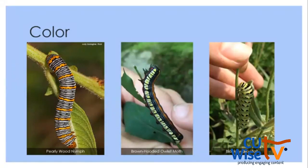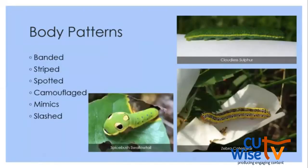Starting with color — I've seen nearly every color of the rainbow on a caterpillar. The pearly wood nymph has orange, white, and black bands. The brown hooded owlet moth actually has five different colors: orange, blue, yellow, black, and red. The black swallowtail has a green body, black bands, and orange spots. Taking note of the colors and, perhaps more importantly, the pattern is really important for identification.